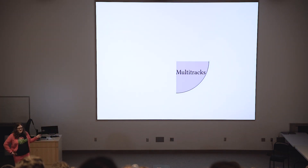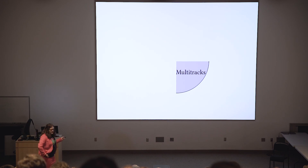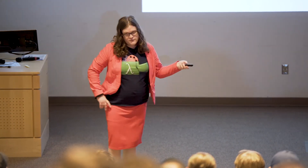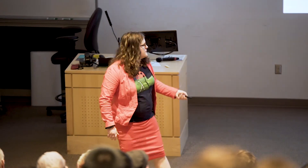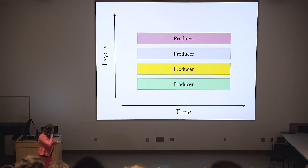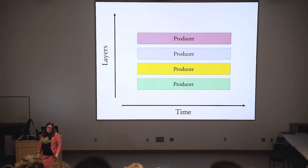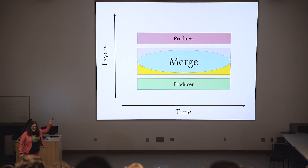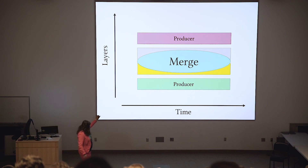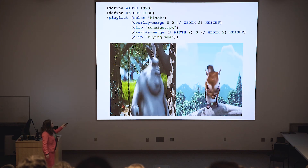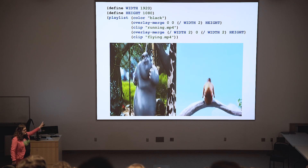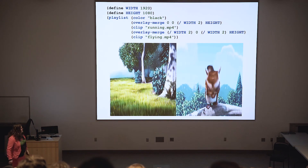Just like playlists compose producers sequentially or temporally, multitracks compose producers physically on top of each other. Because you can only put one on a screen at a time, you need to use merge concepts such as compositing to merge two producers together. In this case, we've merged two videos and played them side by side.